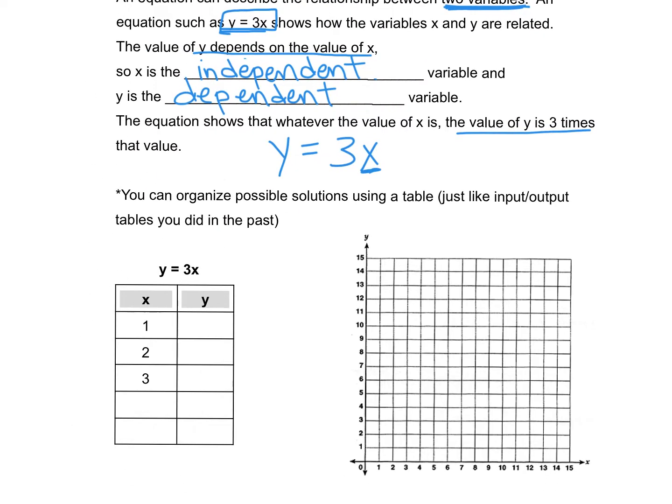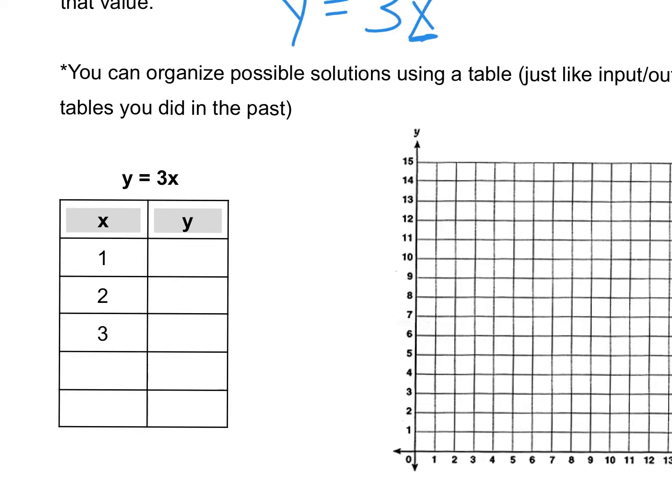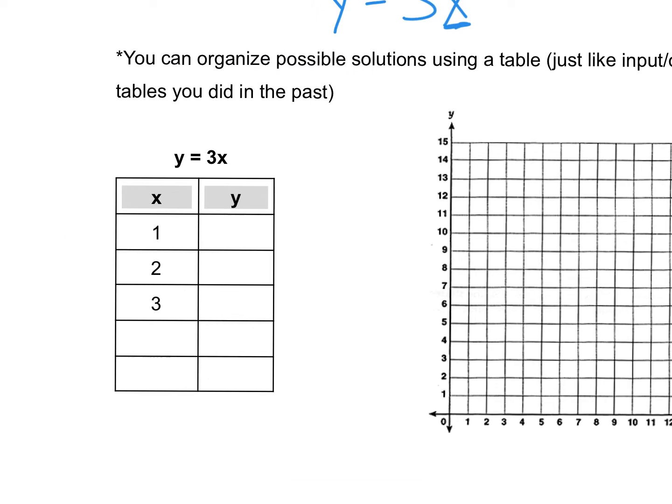We could organize the possible solutions using a table. This is just like the input-output tables you did in the past. So let's start with our table here. Our equation, one more time, y equals 3x. We can just pick values for x. X can be absolutely anything right now. We're going to choose some small, simple numbers to work with. Let's start with 1. If x is 1, we're going to put it into our equation. 3 times 1 would be equal to 3. So y is 3.